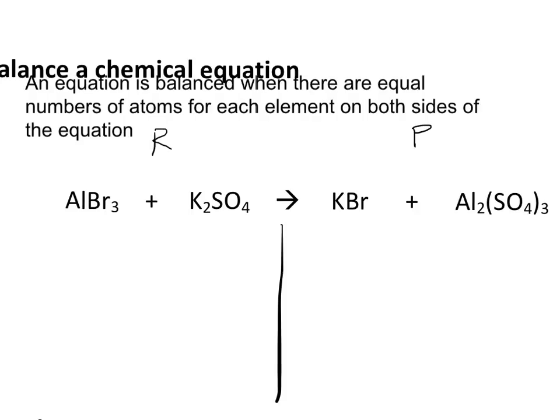If I look on the reactant side, it looks like I have one Al atom, three Br atoms, two potassium atoms, one Sulfur, and four Oxygen.